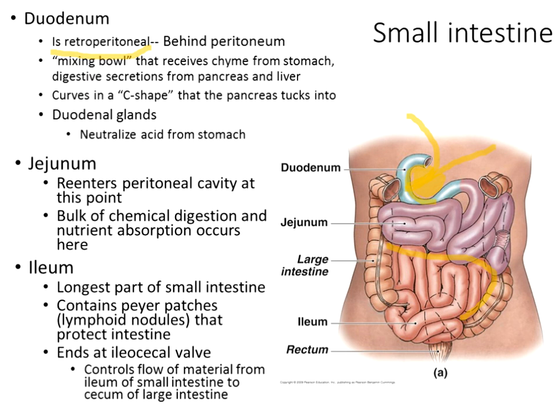The ileum connects down to a valve — not a sphincter — which is unique in that it prevents backflow from the large intestines into the small intestines. This is important because the large intestines contain bacterial colonies that assist with chemically breaking down food products we couldn't break down earlier, and we don't want those bacteria working their way into the small intestines. That valve plays a role in preventing that from happening.